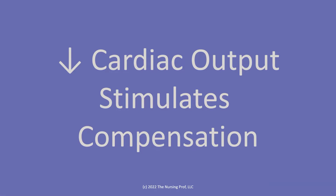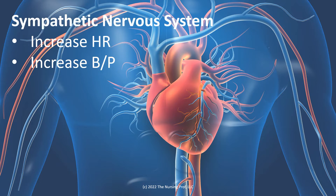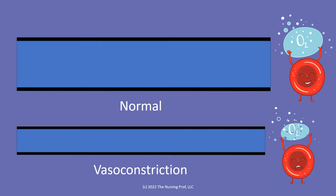A decrease in cardiac output will stimulate compensation to happen, whether it's from standing up suddenly or from some kind of cardiac event. First of all, we have the sympathetic nervous system, and the sympathetic nervous system is going to increase our heart rate and increase blood pressure. It's going to do so by causing vasoconstriction.